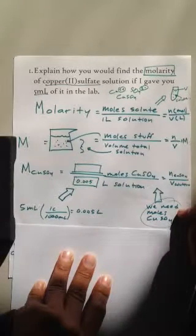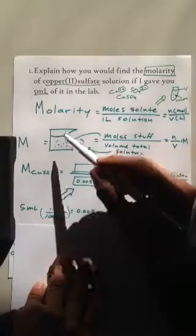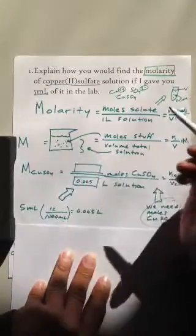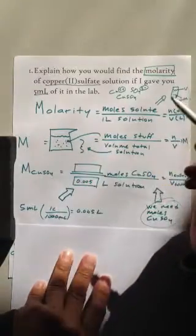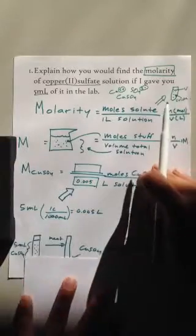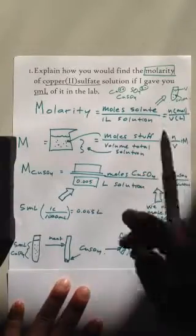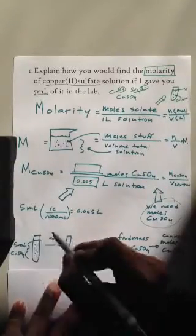So this is what we need. How are we going to find the moles of copper sulfate? Well, it's in the solution, there's water in there, but we just want the copper sulfate. So this is what we do. You get the solution, 5 milliliters.